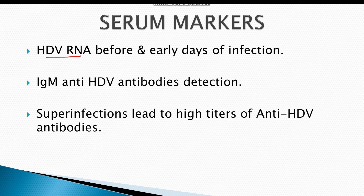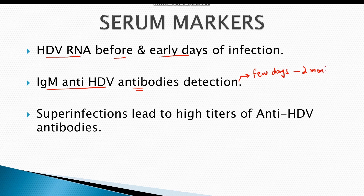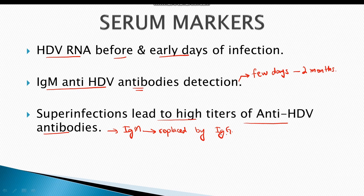Hepatitis D virus RNA is detected in the serum before and in the early days of infection. The most reliable test for the detection of hepatitis D virus is IgM anti-HDV antibodies. In simultaneous infection, these antibodies appear within a few days and last for almost 2 months. Super-infection in chronic hepatitis B leads to high titers of anti-HDV antibodies. Initially these antibodies are IgM, and over time IgM antibodies are replaced by IgG antibodies, indicating progression to chronic liver failure and liver cirrhosis.